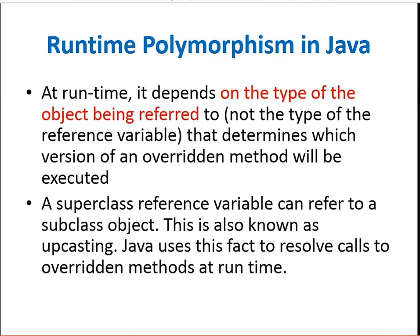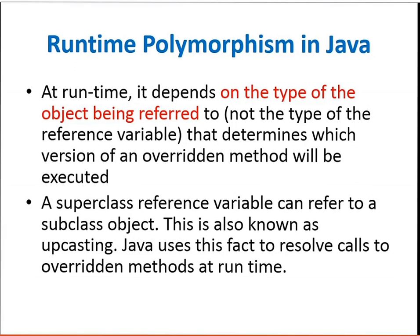At runtime, it depends on the type of object being referred to — whether it is an object of the parent class or child class, superclass or subclass — not the type of the reference variable. This determines which version of the overridden method will be executed. A superclass reference variable can refer to a subclass object. This is also known as upcasting. Java uses this fact to resolve calls to overridden methods at runtime.